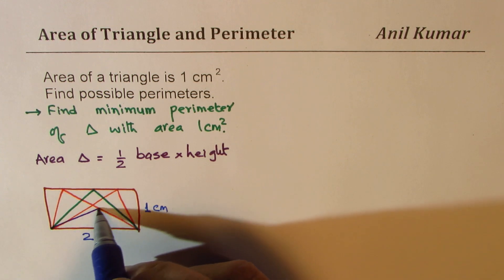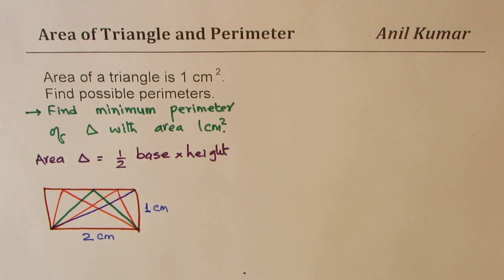All these triangles within this particular rectangle will have area of one centimeter square. Area of triangle is just half. Now, if you have this kind of a situation, you can find perimeter also.